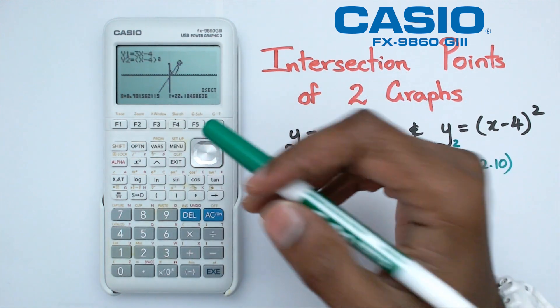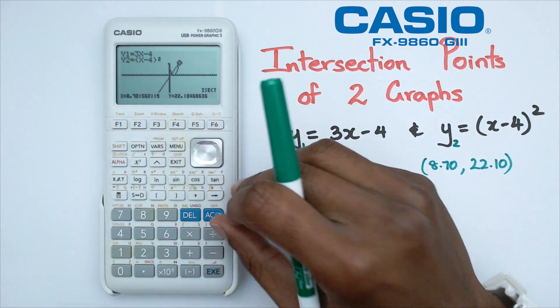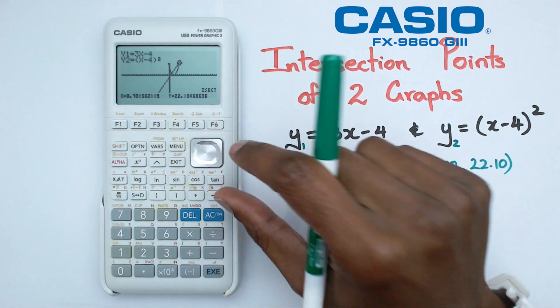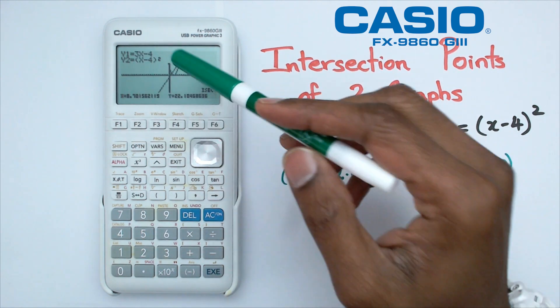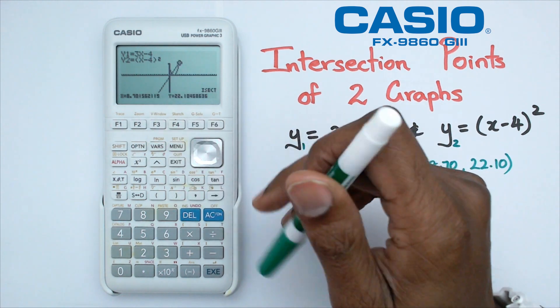So folks, as you can see, the calculator can actually solve the intersection points, but you have to change the view window to actually make sure that you can actually grab both the points.